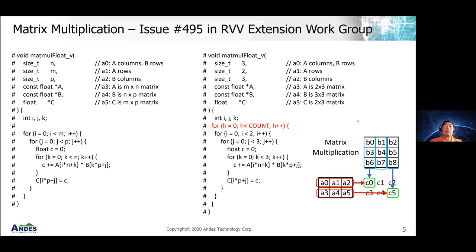Let's start with the code. This is the matrix multiplication example — actually one of the examples posted in the RVV extension workgroup. We have a floating point single-precision 32-bit matrix multiplication. The assumption is that there will be not one but several sets of matrix multiplication — the count can be set to say 100 sets, or whatever number the application requires.